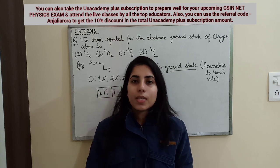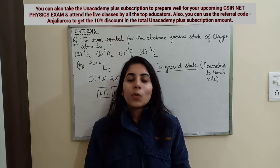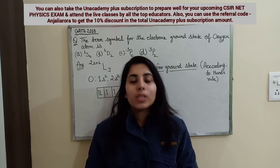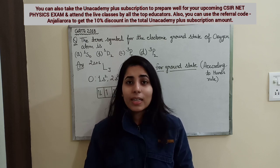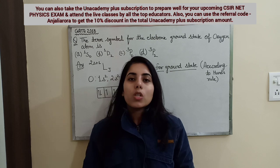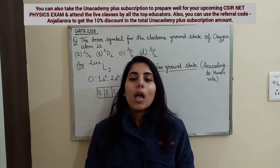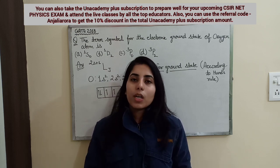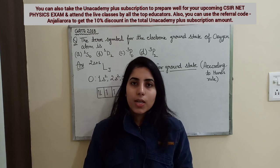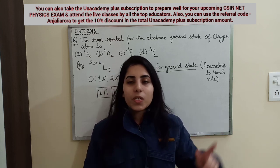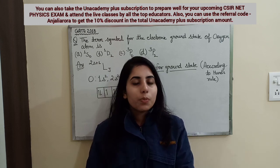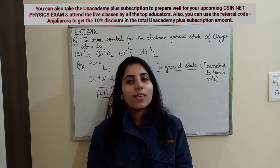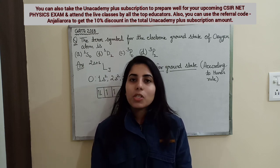The Unacademy Plus subscription is available for different durations: one month, three months, six months, one year, or 24 months — choose whatever is convenient for your preparation. To take the subscription: download the Unacademy learning app, log in, select your goal as CSIR UGC NET, click on the three lines at the left-hand side corner, click on Plus, then click on Get Subscription, and follow the further steps. At the referral code field, write 'Anjali Aurora' and apply it to get the 10% discount.